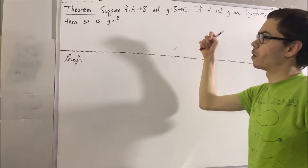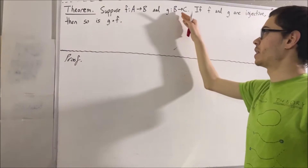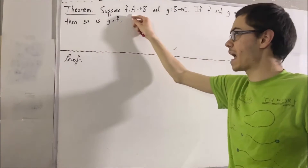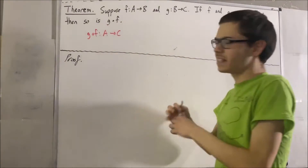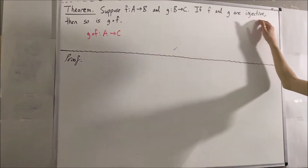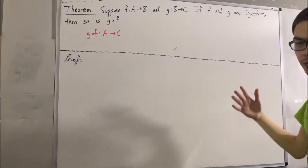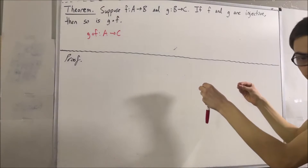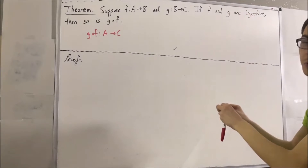Because f is a function from A to B and g is a function from B to C, we immediately know that g compose f is a function from A to C. What does it mean for a function to be injective? It's essentially for any two input values to the function: if their output values are equal, then the input values are equal.